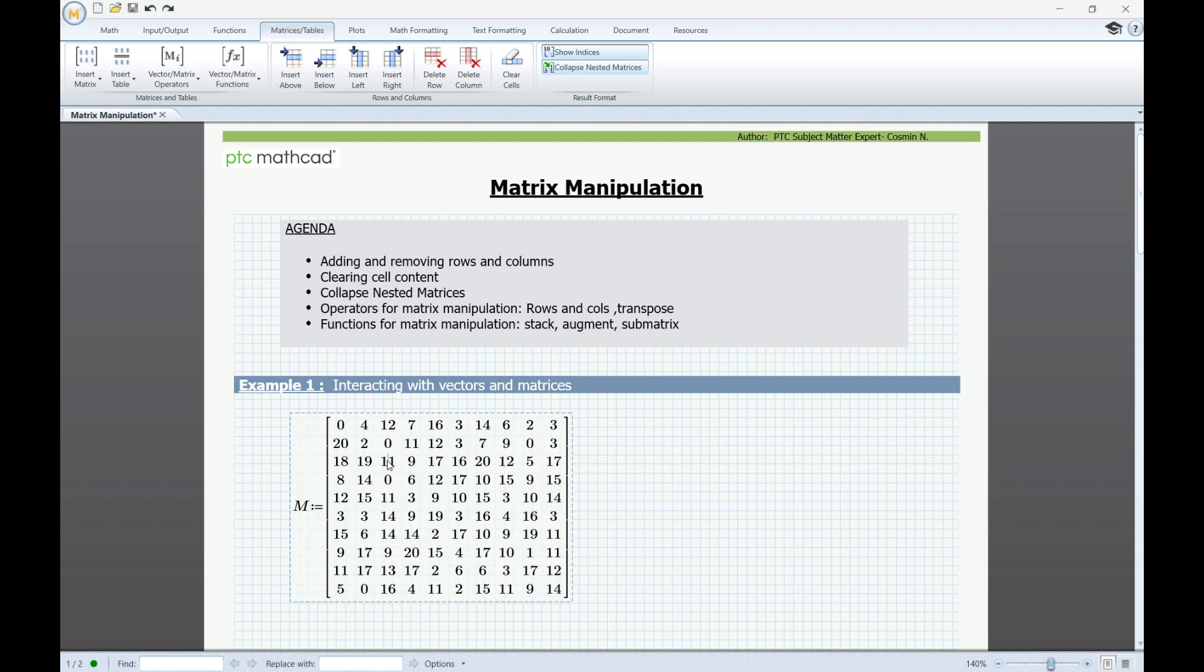the row will be inserted below and the column to the right. Deleting data from a matrix can be done by placing the cursor on a row or column, and from the ribbon, we have the option to delete row or delete column. As an alternative, you can select the values that you want to delete, and you can press the delete key on the keyboard.